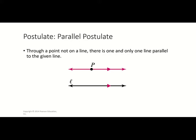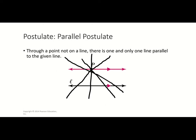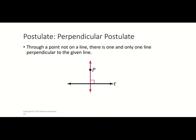The parallel postulate says: through a point not on a line, there is one and only one line parallel to the given line. We mentioned this one earlier, so it's a repeat. When you have a parallel line and a point not on that line, you can draw lots of lines through that point that will intersect the other line, but only one will be parallel.